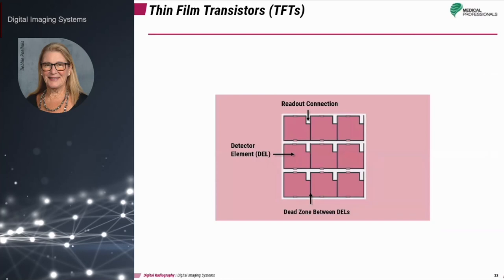The size of the detector elements determines the spatial resolution of a flat panel detector. As the size of the DEL increases, the spatial resolution decreases. This is very similar to when we talk about pixels in a matrix — the smaller the pixel size, the greater the resolution; the larger the pixel size, the less the resolution.